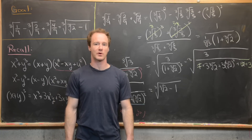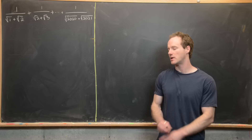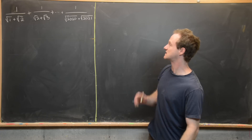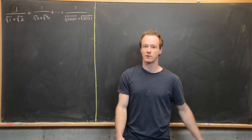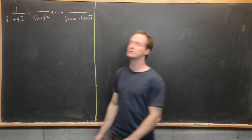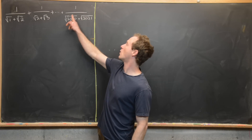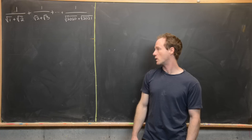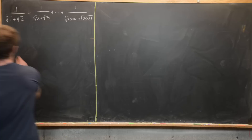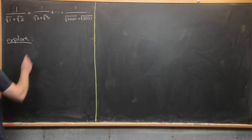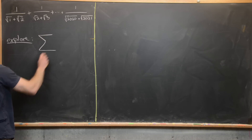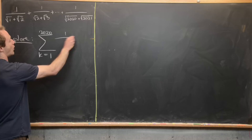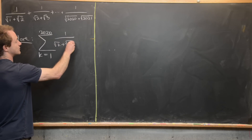The second problem, adapted from math contest problems, asks us to find the finite sum: 1/(√1 + √2) + 1/(√2 + √3) + ... + 1/(√2020 + √2021). Using summation notation, this is the sum from k=1 to 2020 of 1/(√k + √(k+1)).